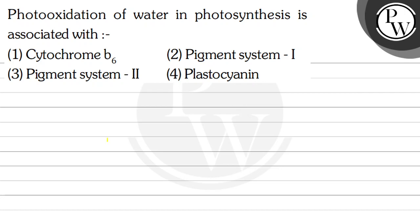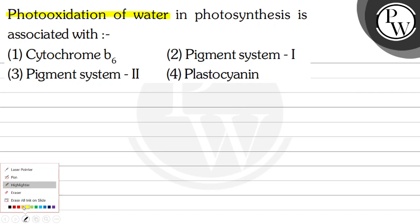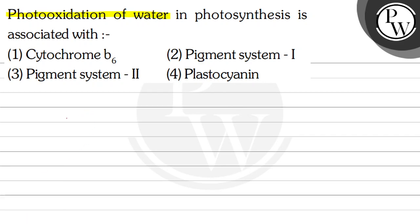Hello, let's see the question. The question says: photo oxidation of water in photosynthesis is associated with — option one: cytochrome b6, option two: pigment system one, option three: pigment system two, option four: plastocyanin.